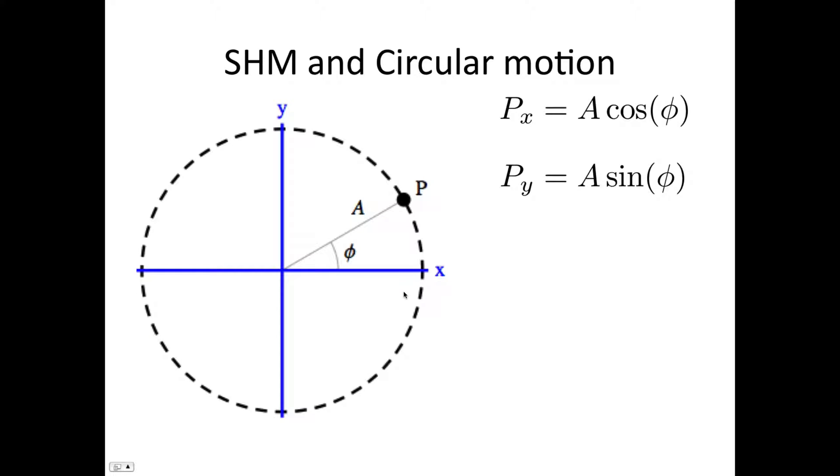The x-coordinates of point P are given by A cos phi, as this is the adjacent side to this angle. The y-coordinates are given by A sine phi.